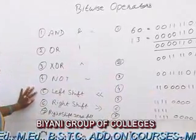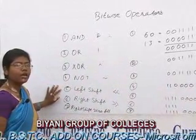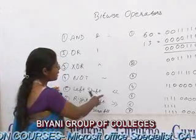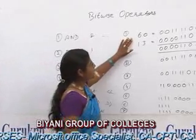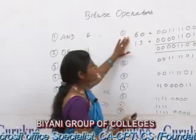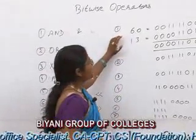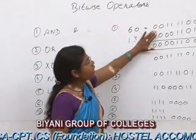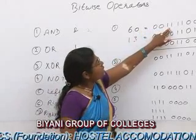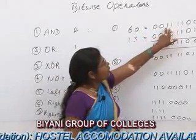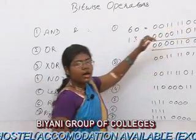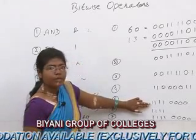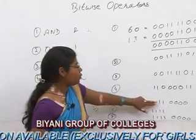The fifth operation is left shift operator. In left shift operator, we shift the values to the left hand side. If we apply this operator on 60, the values are shifted to the left hand side. These two values are discarded and the ones are shifted over, and the rest of the values are filled with 0. Therefore, we get the output 240, which in binary is 11110000.